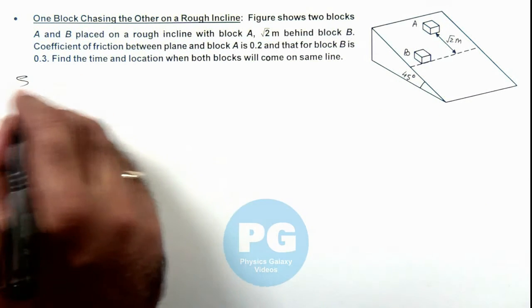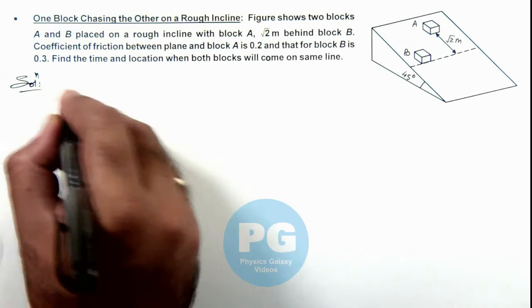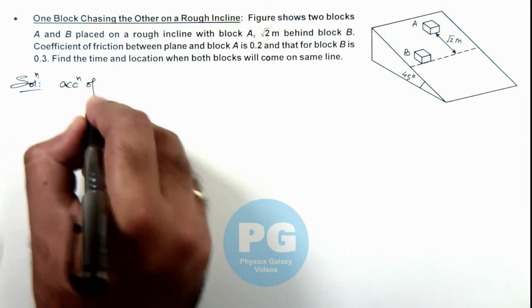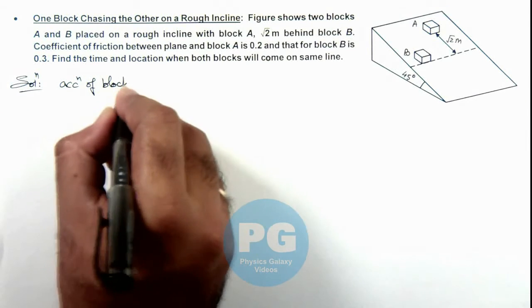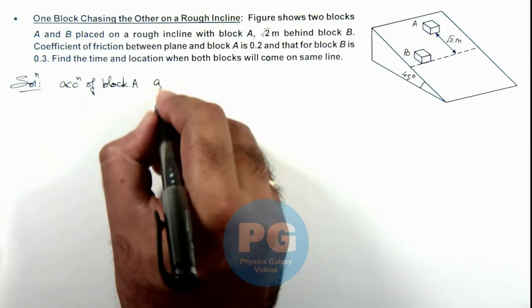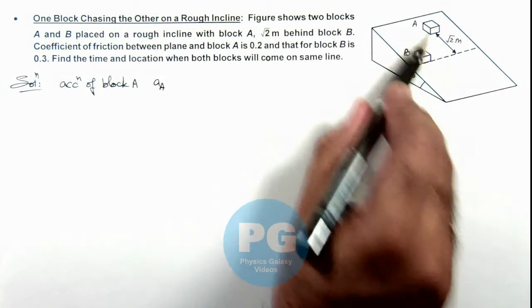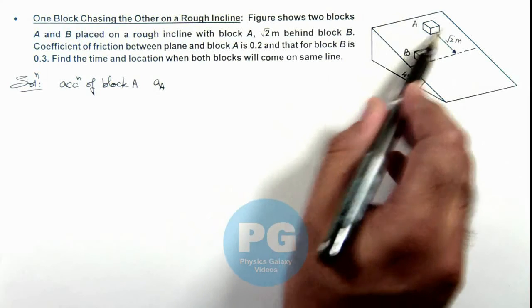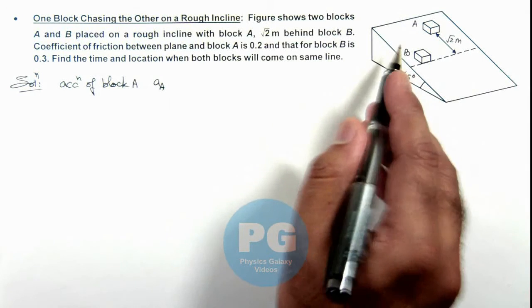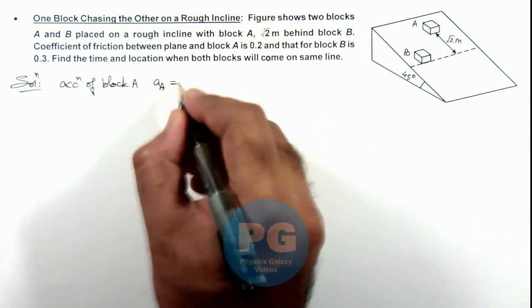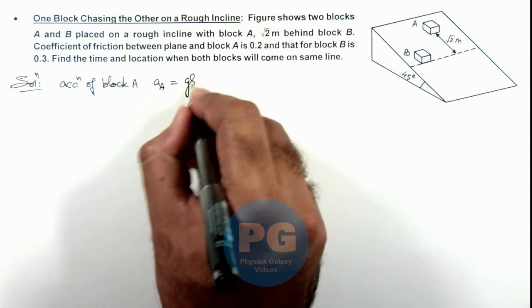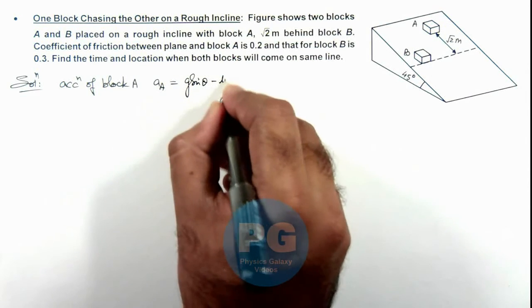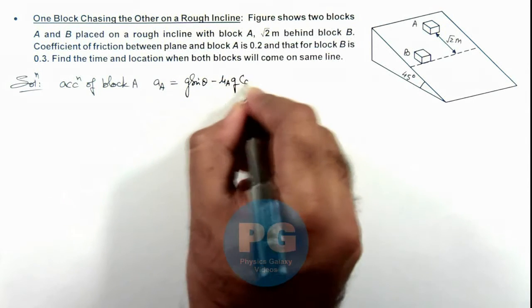If we calculate the acceleration of block A, we can directly write block A will be sliding due to mg sin θ and the friction acting on it will be μN that is μmg cos θ. So I can directly write the acceleration of block A as g sin θ minus μₐ g cos θ.